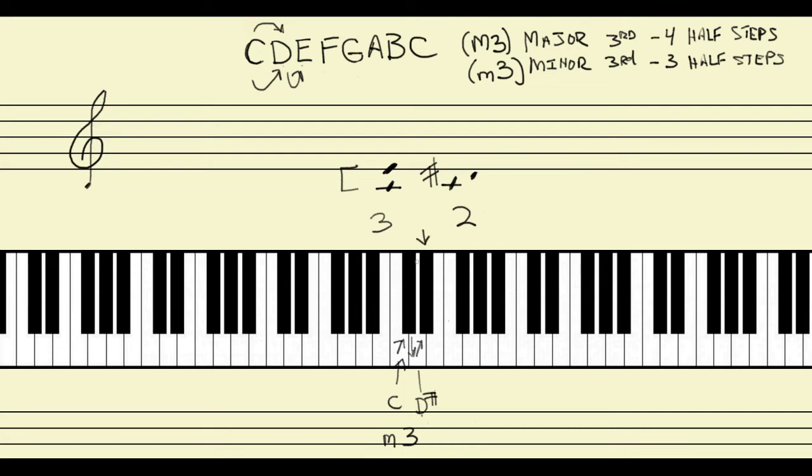Remember this note right here, this black key that is between D and E. We actually have two different names for that. We can call it, as we did originally, we can call that note D sharp, or the black key that is one half step above D. But we can also call that note E flat, or the note that is one half step below E. And notice what happens. It's exactly the same note. We play the exact same note on the piano keyboard, which means that those notes are in what we called an enharmonic relation.